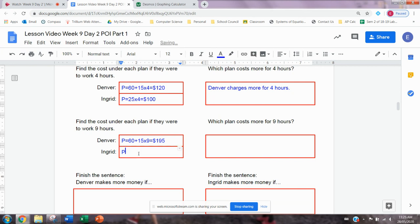For Ingrid, I'm going to fill in the same type of thing. But her equation was 25 times the number of hours, which here is nine hours. So 25 times nine is 225. So now who charges more? In this case, Ingrid charges more for nine hours.